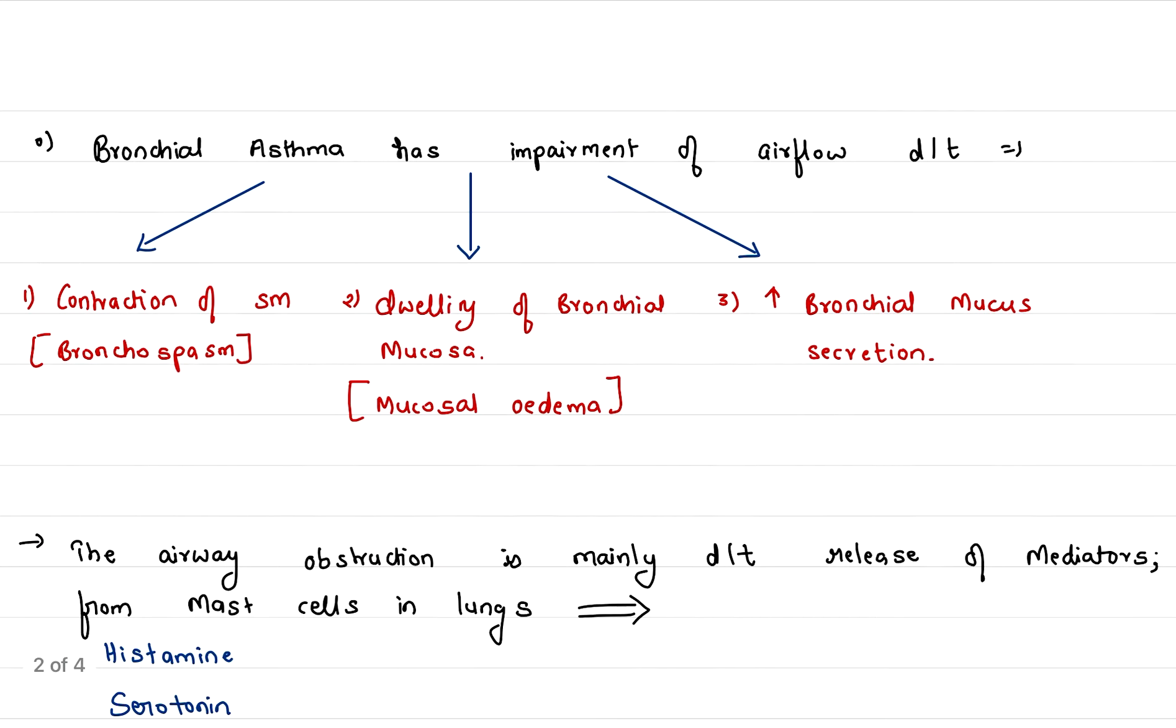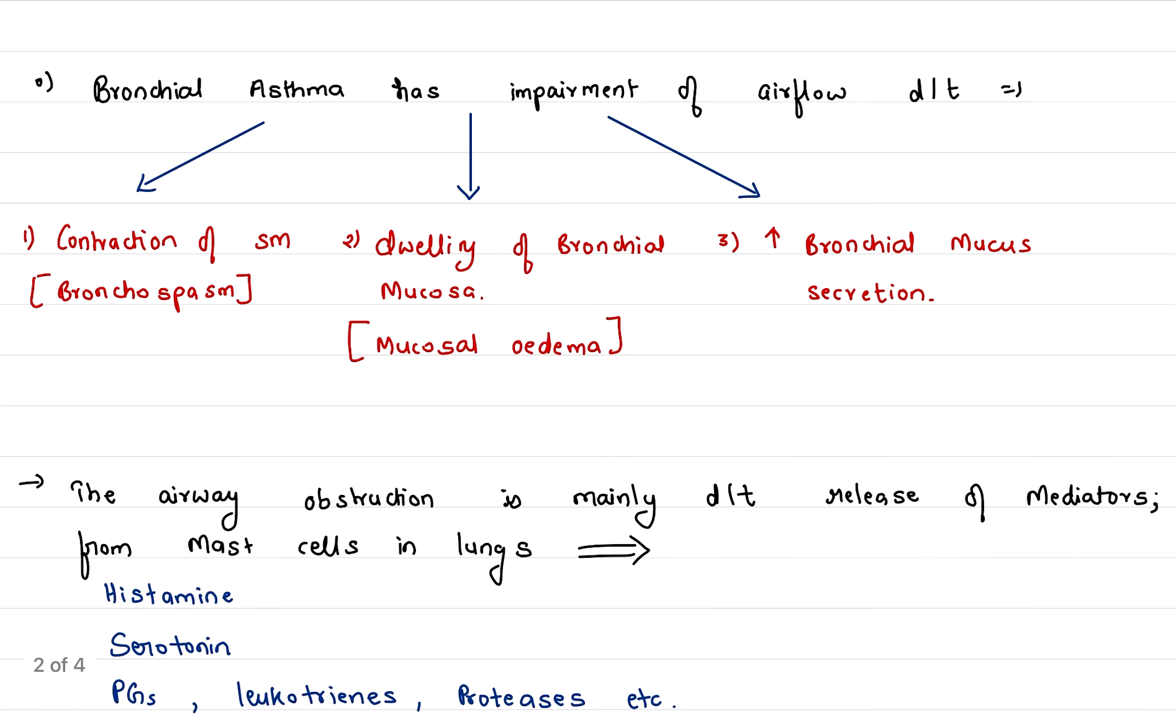Starting with bronchial asthma: it has impairment of airflow due to three reasons. First is contraction of smooth muscles, that is bronchospasm. Second is swelling of bronchial mucosa, that is mucosal edema. And third is increased mucosal secretion. Any of these three conditions can cause bronchial asthma.